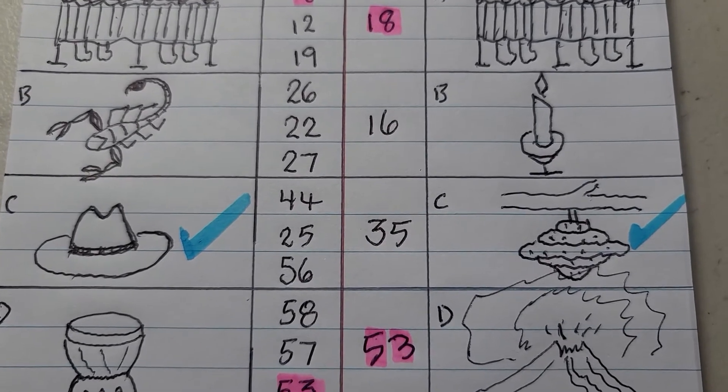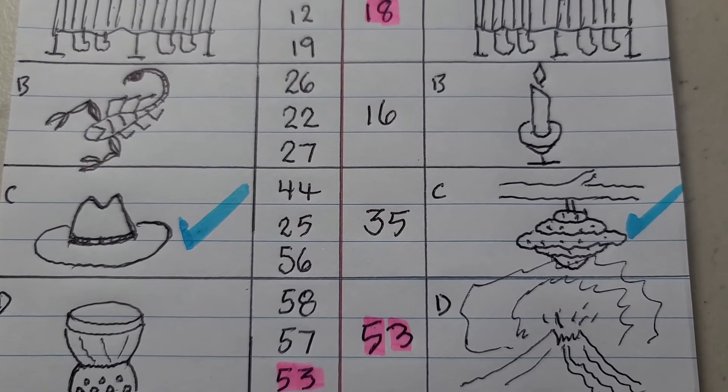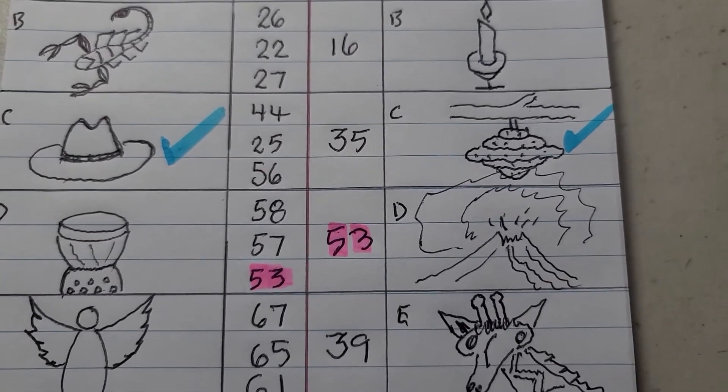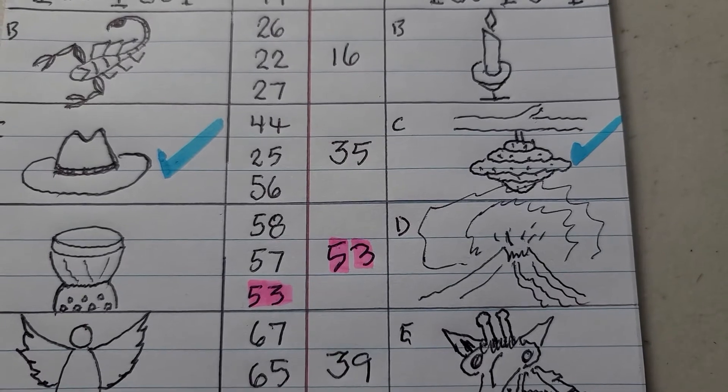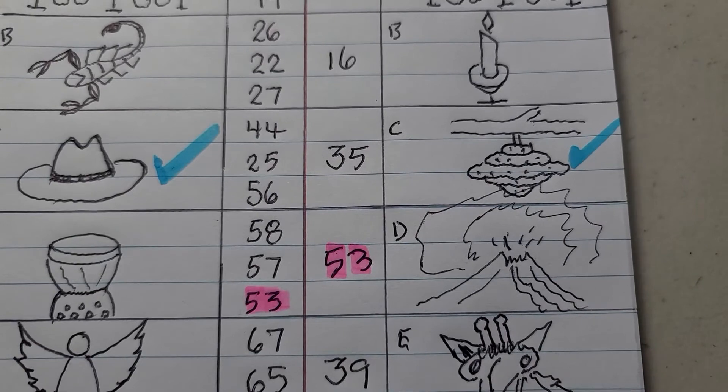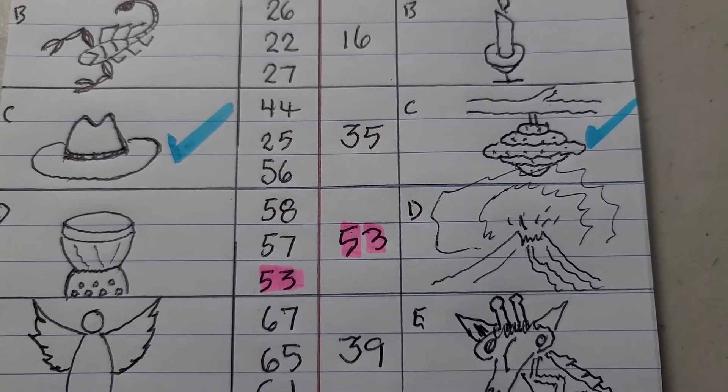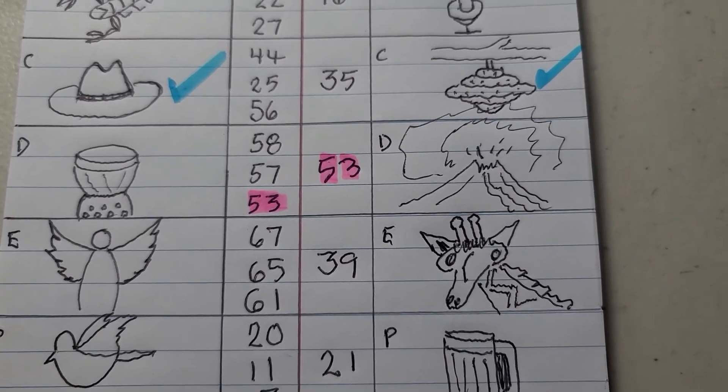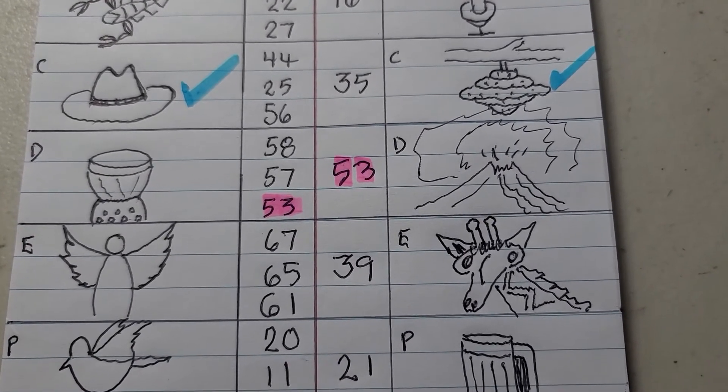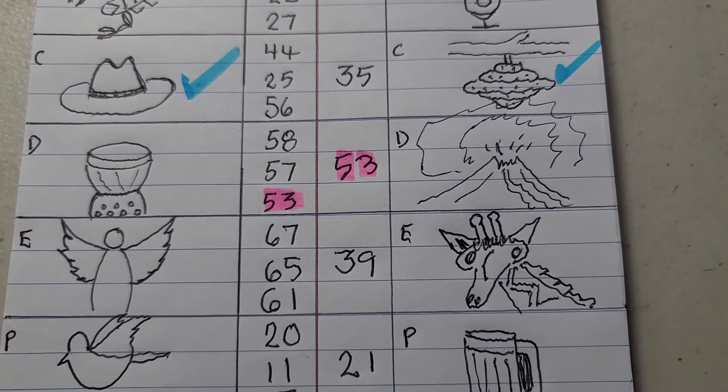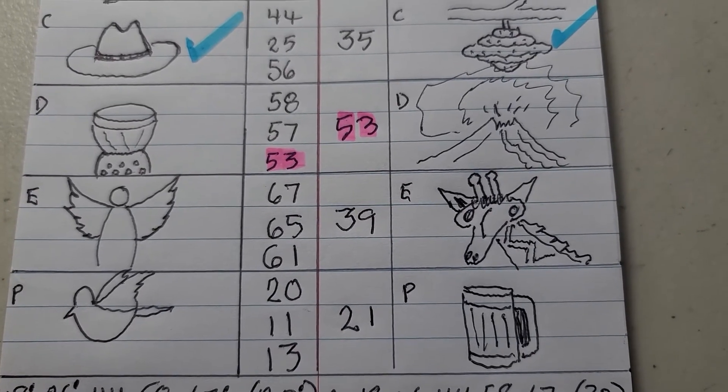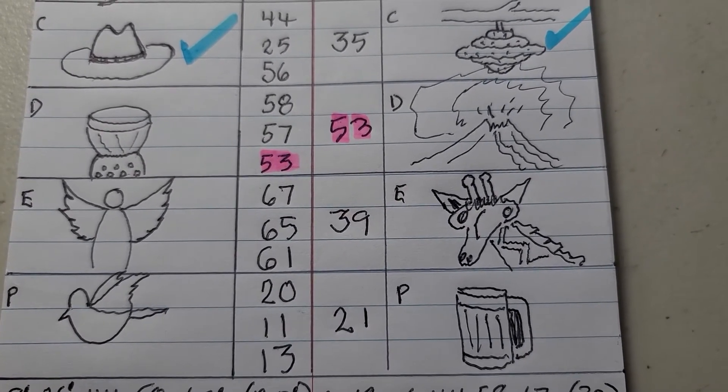The next one is 53 which is an erupting volcano, and we got that. That's a secondary read. My giraffe, I drew it the last time but I didn't this time, but the giraffe finally hit, number 39. And finally, number 21 is a beer mug for the PowerBall.